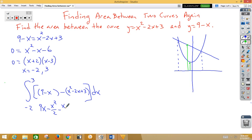...we get a negative x cubed over 3 plus an x squared minus a 3x bounded from negative 2 to 3.